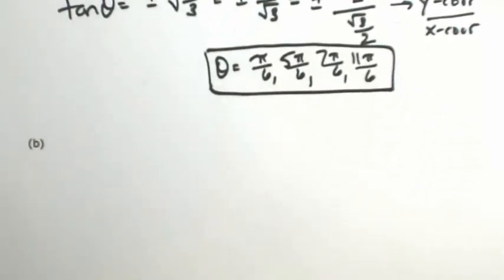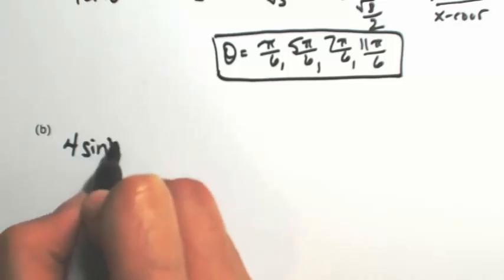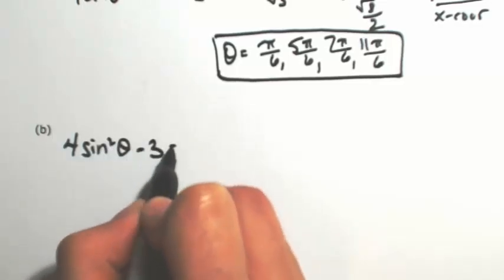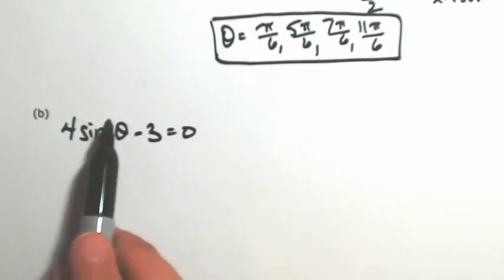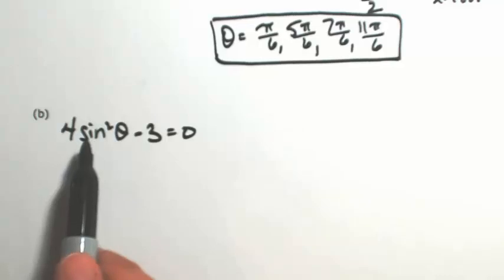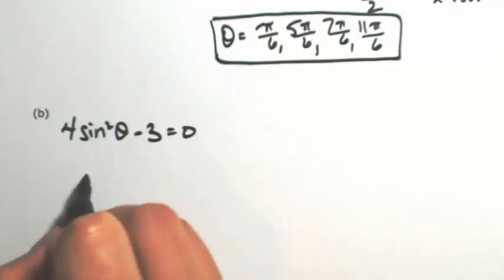Let's do another one that's been squared. Let's do maybe 4 sine squared of theta minus 3 equals 0. Okay, so to get theta by itself, I need to get the sine of theta by itself, which also means I need to get the sine squared of theta by itself. So I'm going to add 3 and then divide by 4.